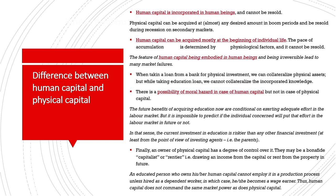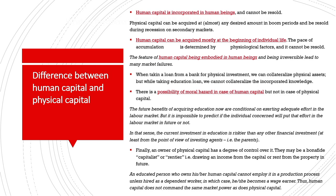Human capital can be acquired mostly at the beginning of an individual's life, and its pace of accumulation is determined by physiological factors. Physical capital can be acquired at almost any desired amount in boom periods and resold in recession on secondary markets. But human capital is irreversible — you cannot acquire long years of education in the middle of your lifespan. The embodied and irreversible nature of human capital leads to many market failures. For example, when taking a bank loan for physical investment, we can collateralize the physical asset, but when taking an education loan, we cannot collateralize the incorporated knowledge within us.